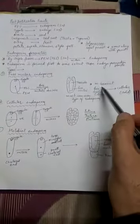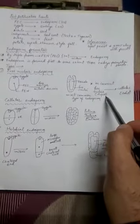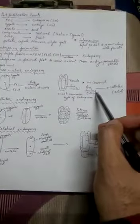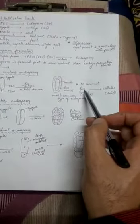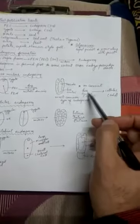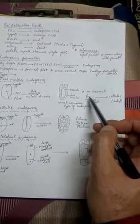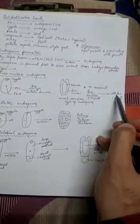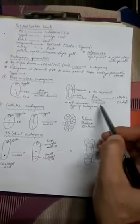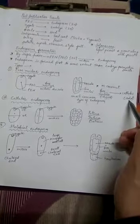Coconut is an example in which initially the endosperm is free nuclear. The coconut water or coconut milk that we cherish is the free nuclear endosperm. As the coconut fruit matures, its endosperm starts changing from free nuclear into cellular — that means cytokinesis will start — so the liquid form of endosperm changes into the solid form of endosperm.